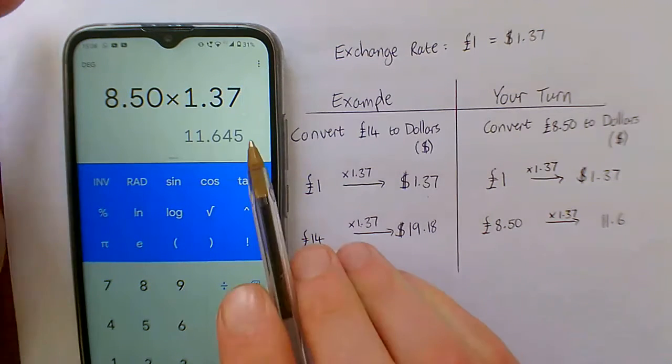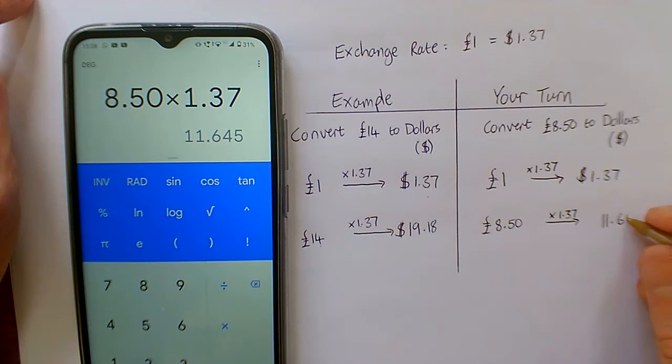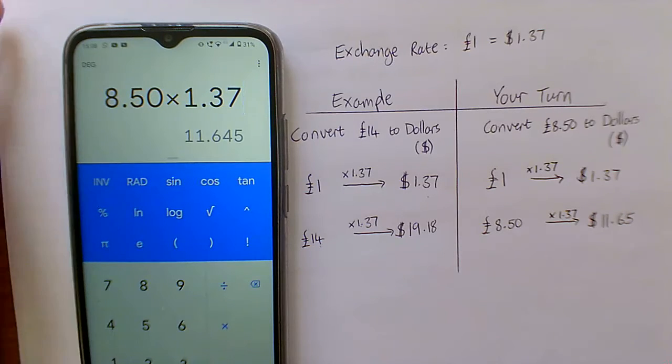That gives us 11.6. Now, I'm going to round it to two decimal places here because currency is always two decimal places. So $11.65. And we're done.